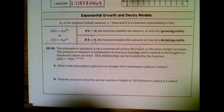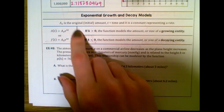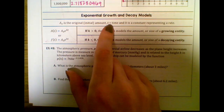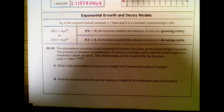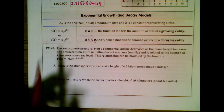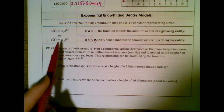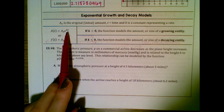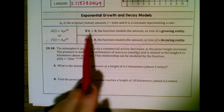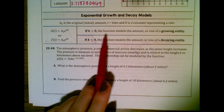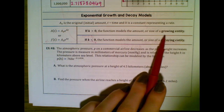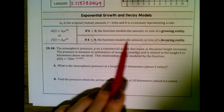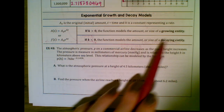Exponential growth and decay models: A₀ is the original or initial amount over a time of t, and k is a constant representing a rate. If k is greater than zero, the function models a growing entity. If k is less than zero, the model represents a decaying entity.